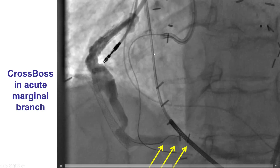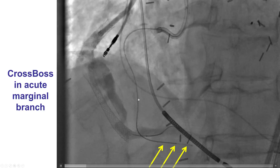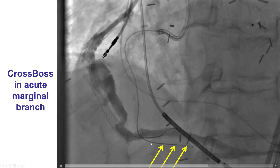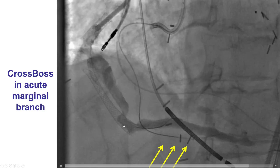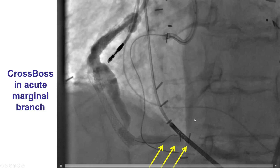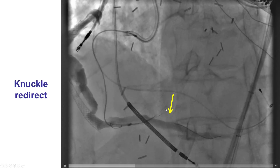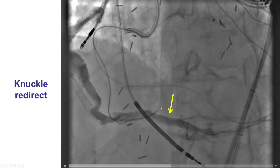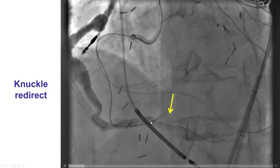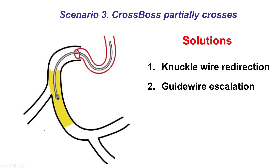This is an example of the CrossBoss catheter advanced into the right coronary artery and then going into one of the acute marginal branches instead of following into the distal RCA and the posterior lateral vessel. After using a knuckled guide wire, the CrossBoss can be redirected into the right posterior lateral branch.